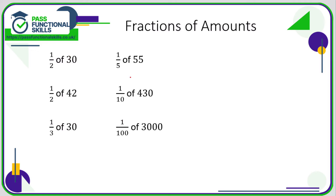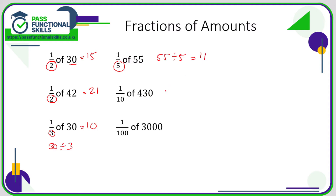Let's look at fractions of amounts. Some are very easy: half of thirty is fifteen, half of forty two is twenty one. What you've done is divided the total by the number on the bottom. So a third of thirty is thirty divided by three, which is ten. One fifth of fifty five is fifty five divided by five, which is eleven. A tenth of four hundred thirty is four hundred thirty divided by ten — chop off that zero — forty three. One hundredth of three thousand is three thousand divided by one hundred — chop off two zeros — thirty.